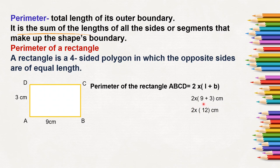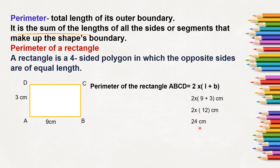2 into 9 plus 3 is nothing but 12, and 2 into 12 is equal to 24 cm. So the perimeter of rectangle ABCD is 24 cm. If you add as 3 plus 3 and 9 plus 9 also, you will get the same answer as 24 cm, because perimeter is nothing but the length of the outer boundary.